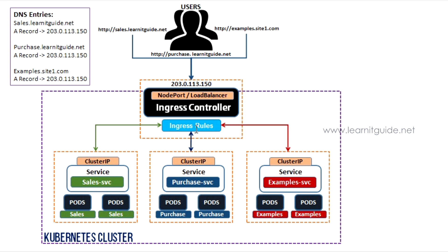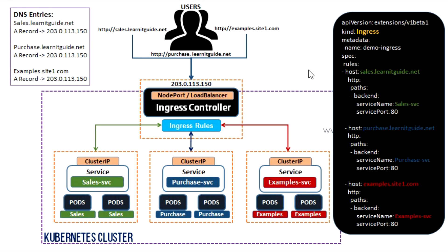So how do we create ingress rules? Here is a basic example. Ingress is also a Kubernetes resource, so create a YAML file with kind Ingress, specify the name, and define the spec with rules. The syntax uses a hyphen-host entry along with http, path, and the backend service where traffic should be redirected.